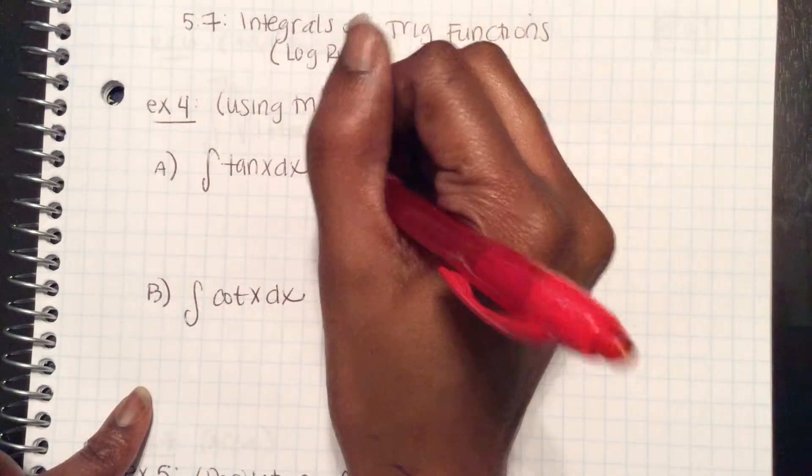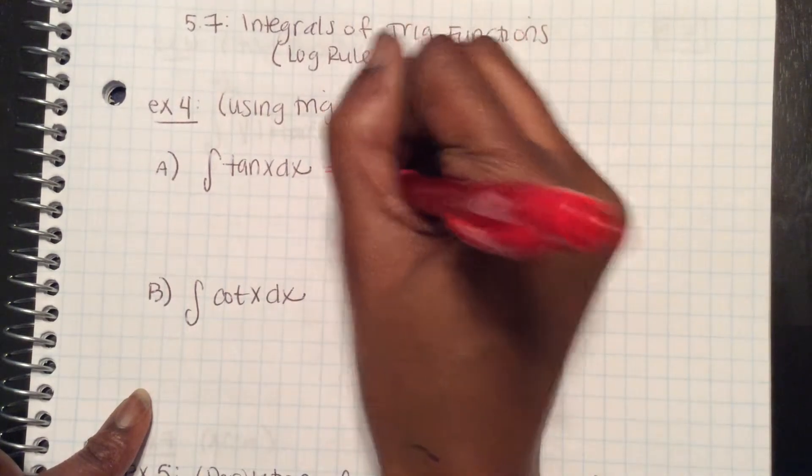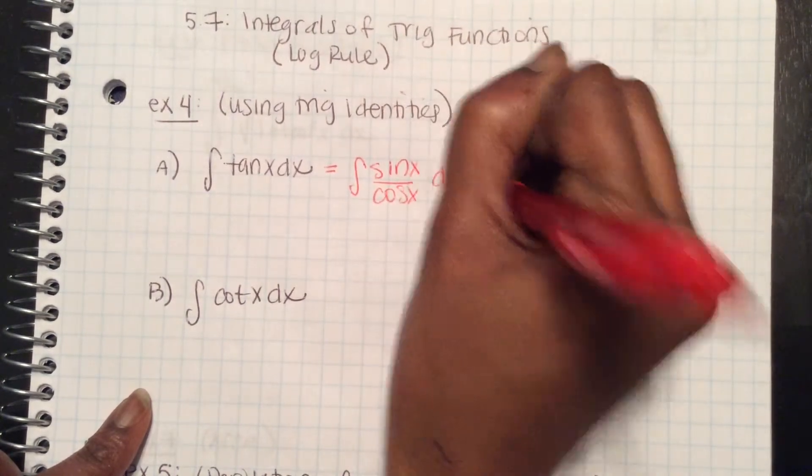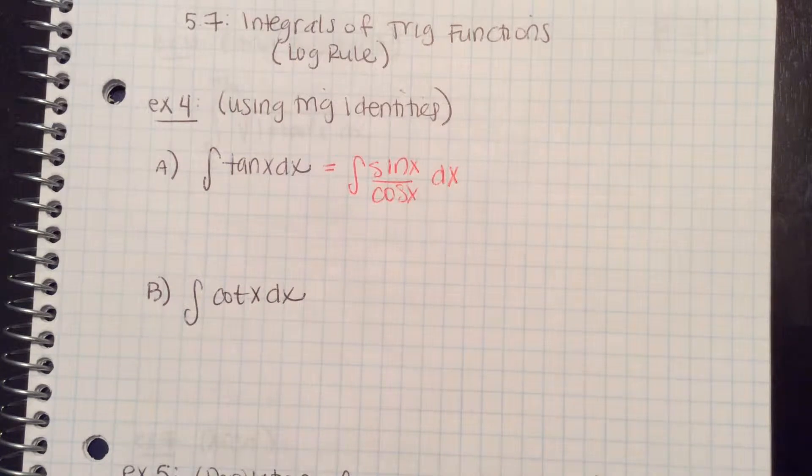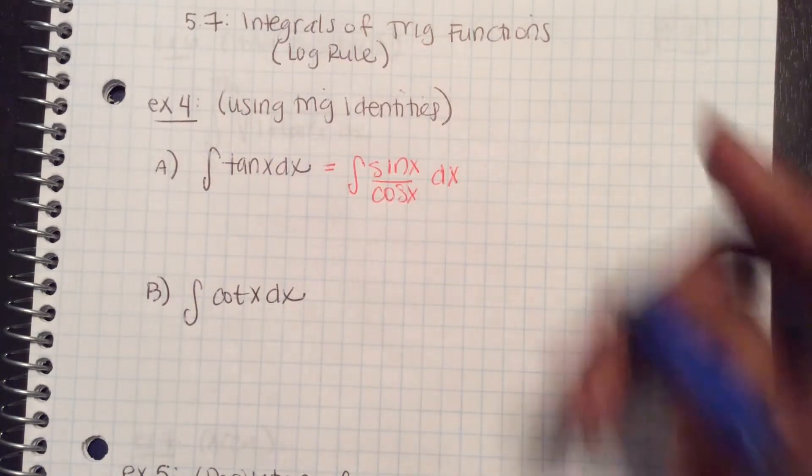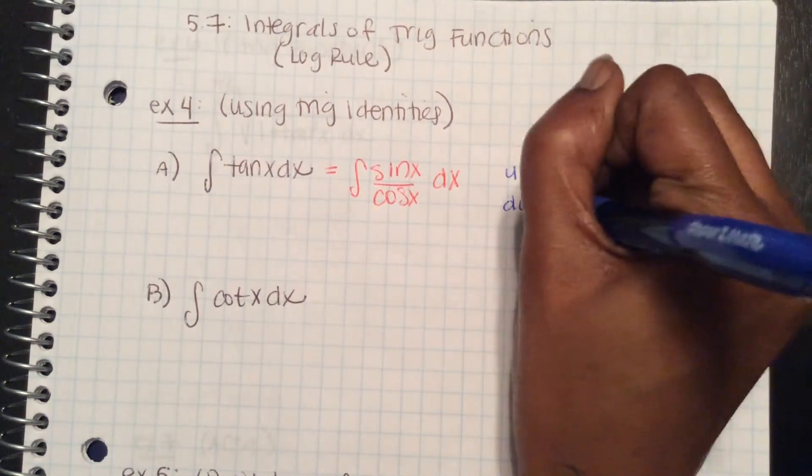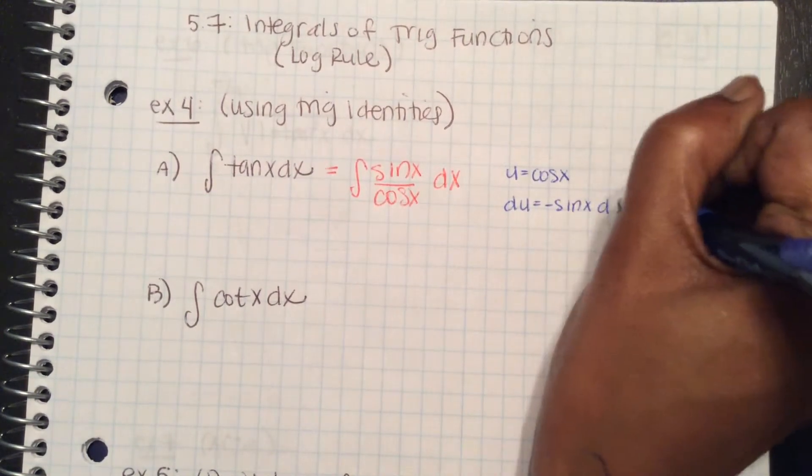So tangent x can also be written as sine x over cosine x dx. If I'm integrating that using that identity, I can use u substitution. I would let u equal cosine x, du is negative sine x dx.